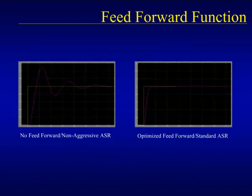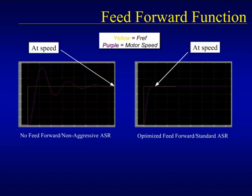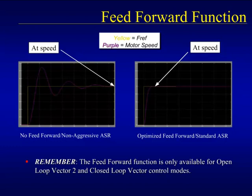These graphs give a better idea of the possible advantages of the feed forward function. On each chart, the yellow trace is the commanded frequency reference while the purple line is the motor speed. The left window shows a non-aggressive, non-feed forward setup — the non-aggressive settings of the ASR are to prevent the overshoot that occurs anyway. The right window shows the feed forward function turned on and the ASR set to factory default settings. The point at which speed agree is met shows a much quicker reaction without any overshoot when the feed forward function is enabled. Remember that the feed forward function is only available while in the closed loop flux vector or open loop vector 2 control modes.